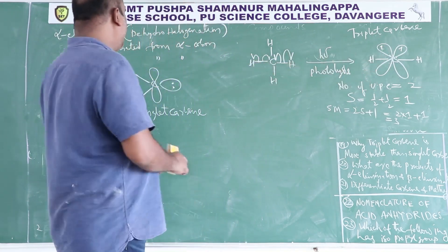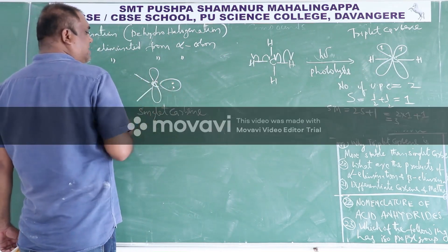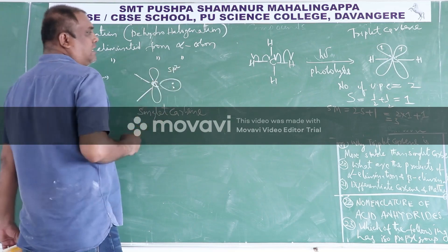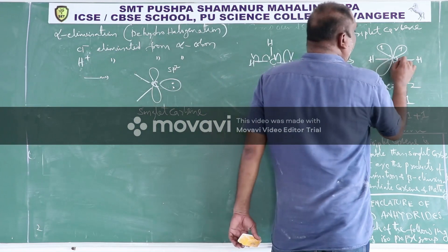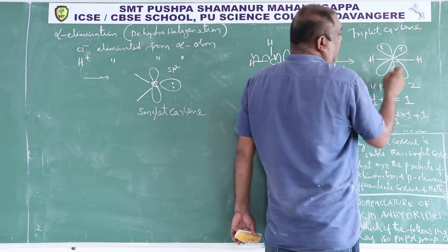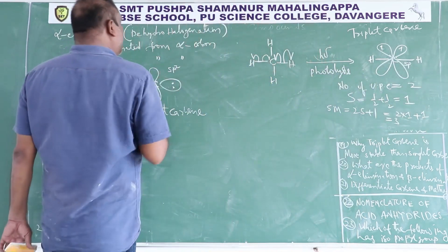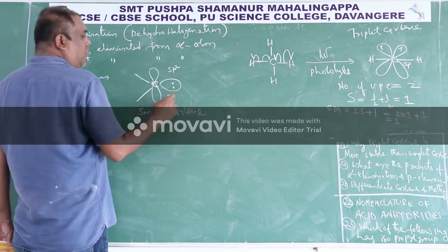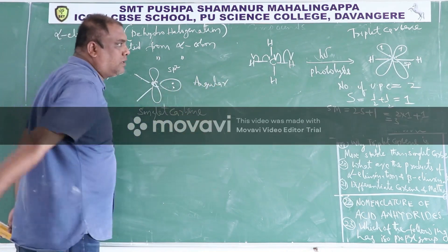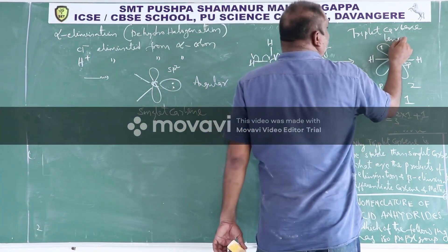Singlet carbene has two bond pairs and one lone pair — total three electron pairs — so carbon undergoes SP2 hybridization, making it angular in shape. Triplet carbene has two bond pairs and no lone pair, only two unpaired electrons, so hybridization is SP, making triplet carbene linear in shape. Singlet carbene has no unpaired electrons (diamagnetic); triplet carbene has two unpaired electrons (paramagnetic).